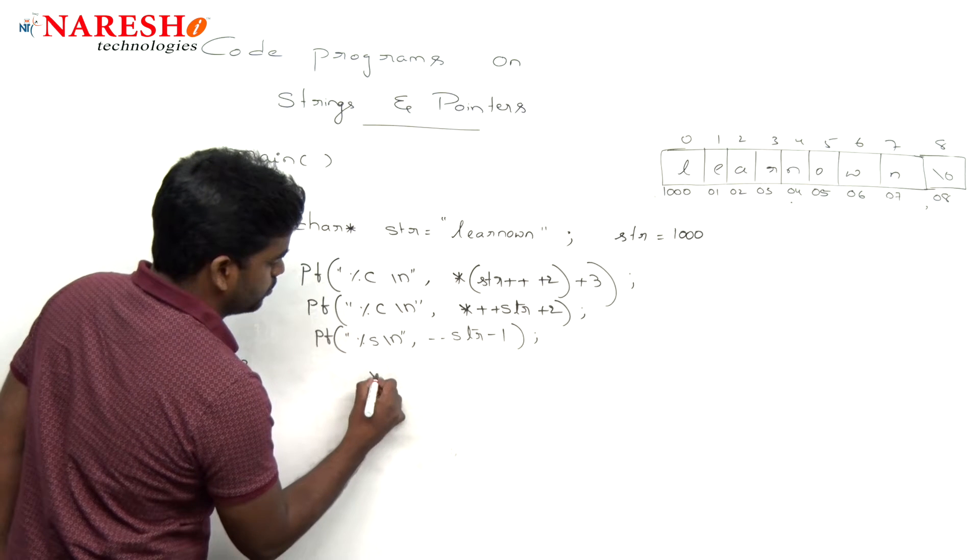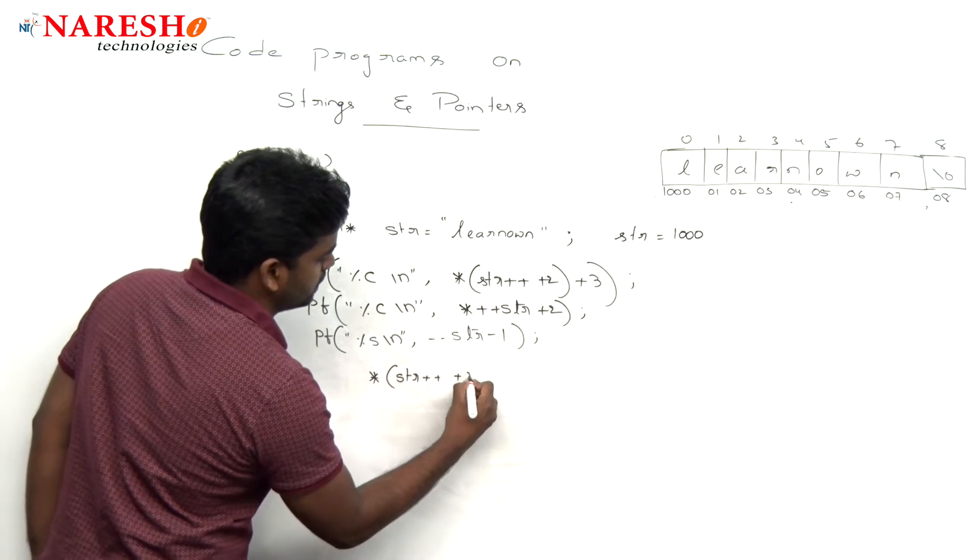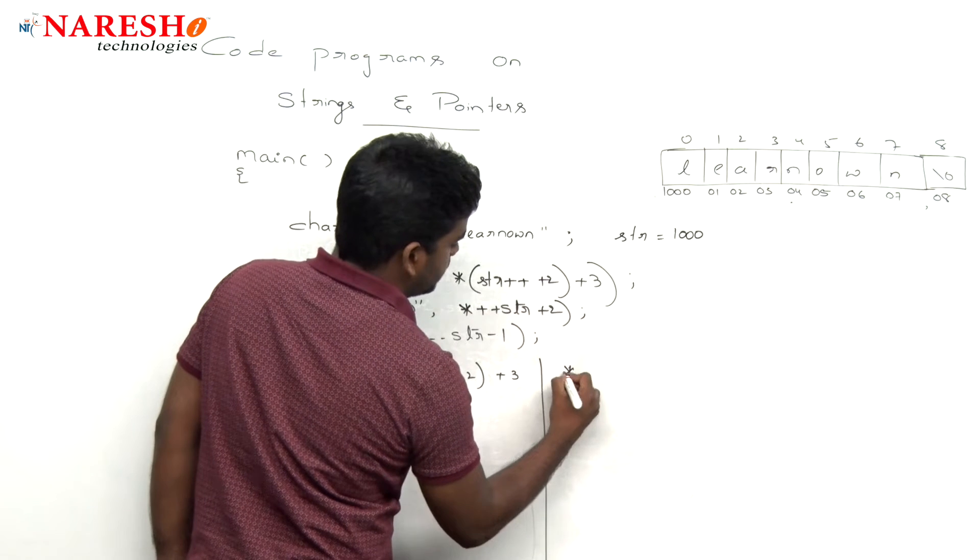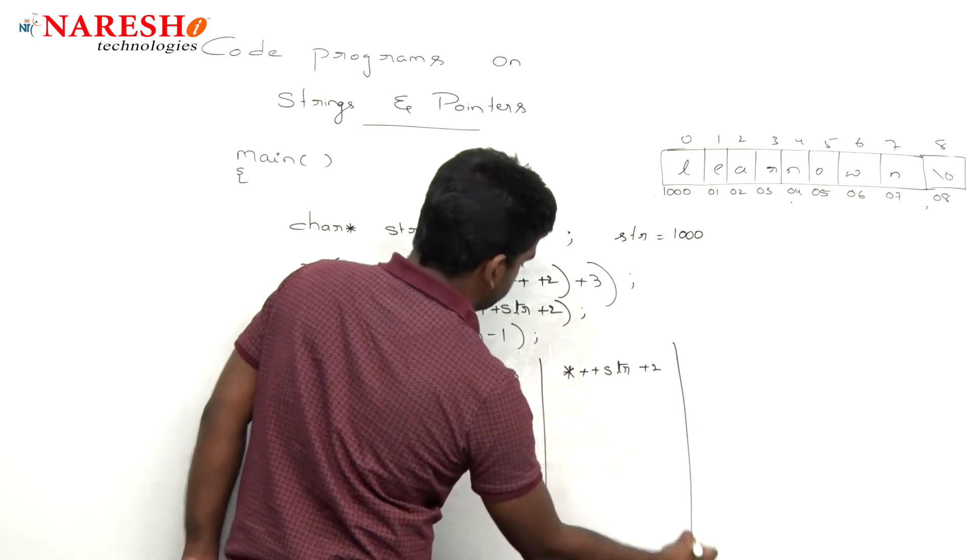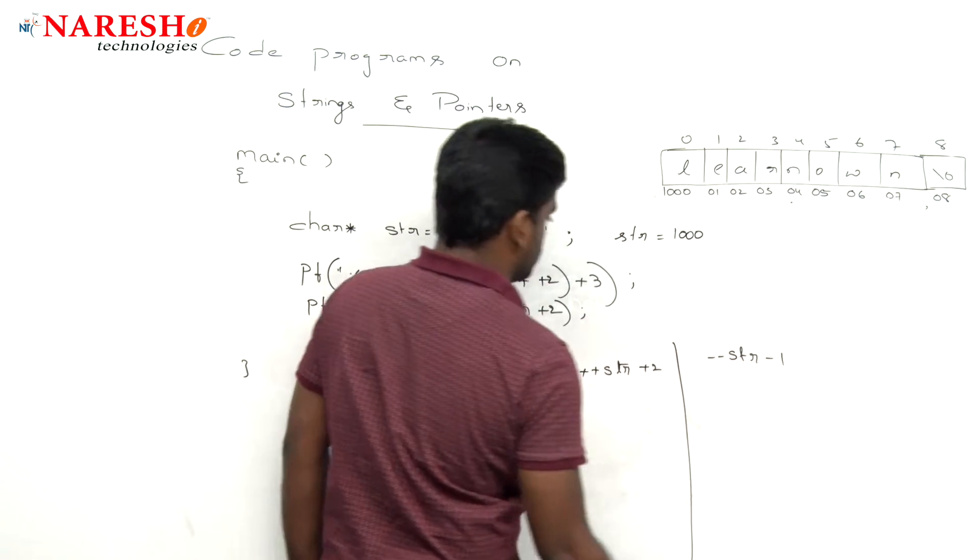The first expression we are evaluating: pointer str++ + 2 + 3. Second one is pointer ++str + 2, and the next one is --str - 1.